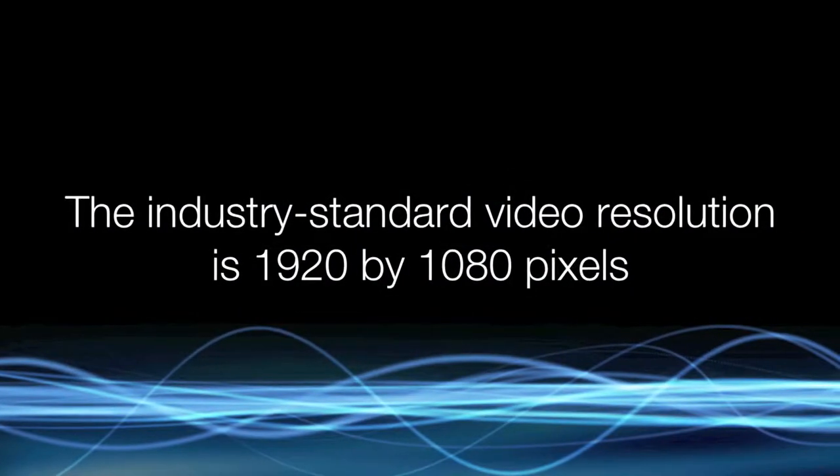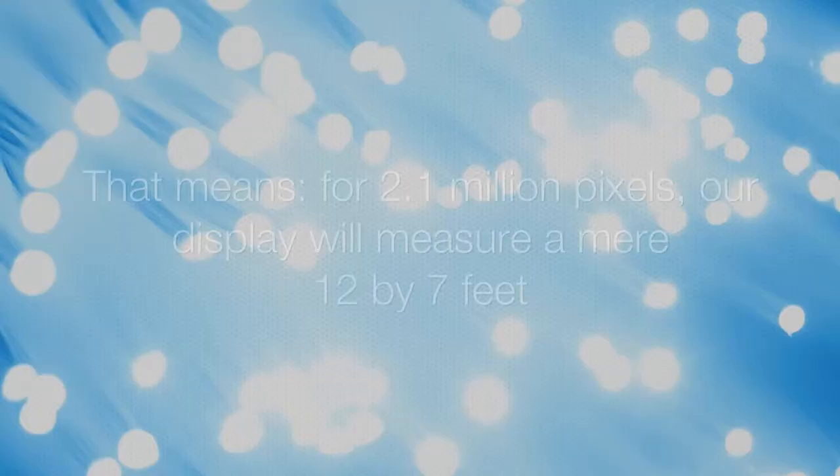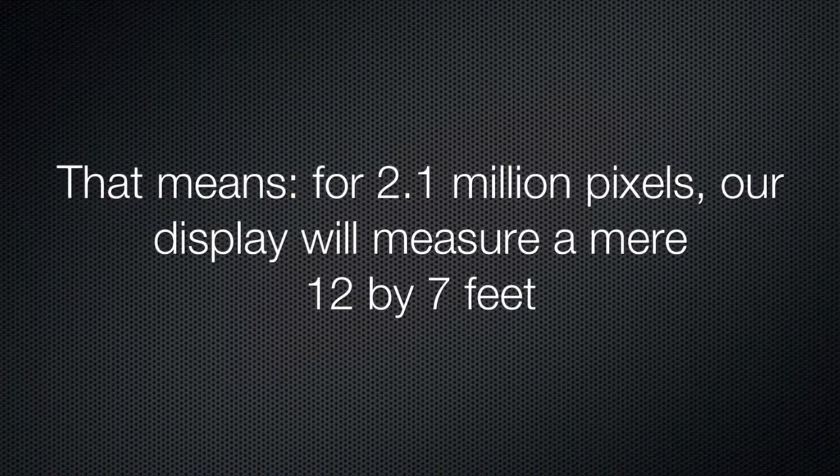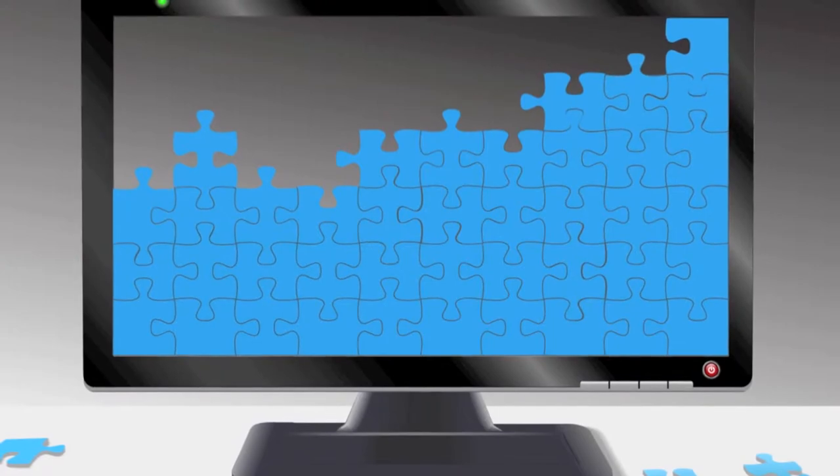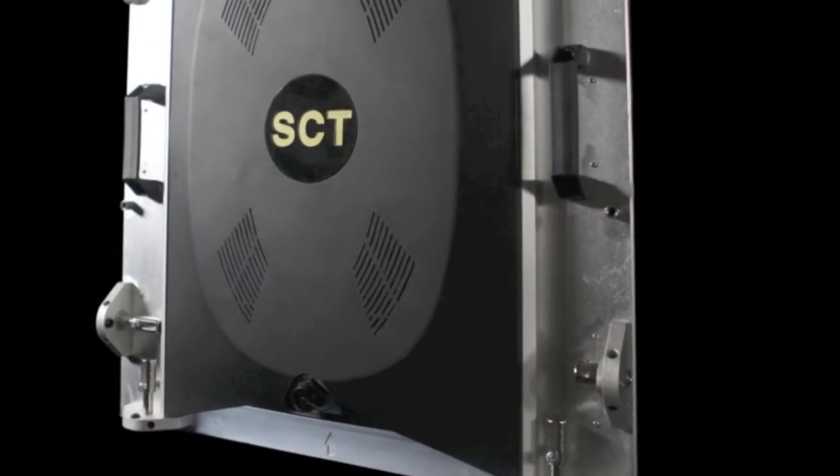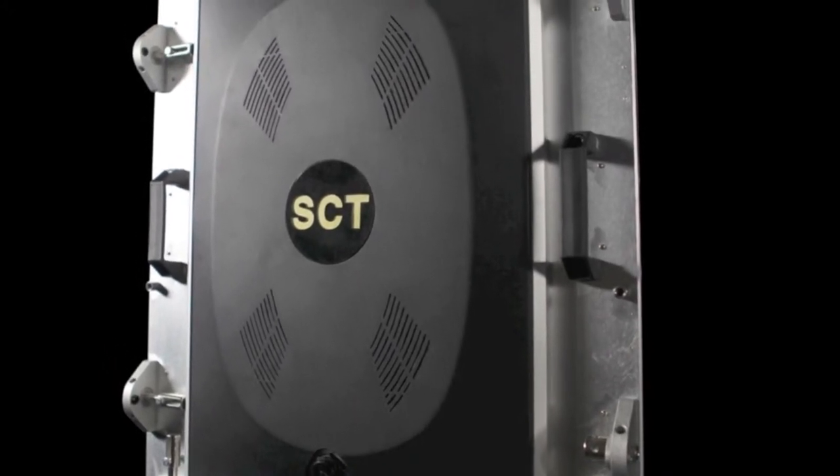The industry-standard video resolution is 1920 by 1080 pixels. Our LED wall can provide an exact pixel map for spaces at any HD resolution. That means, for 2.1 million pixels, our display will measure a mere 12 by 7 feet, without interpolation, opening up new applications for this type of display. And with easy front panel access for tile replacement, our refined wall calibration process simplifies all service issues.